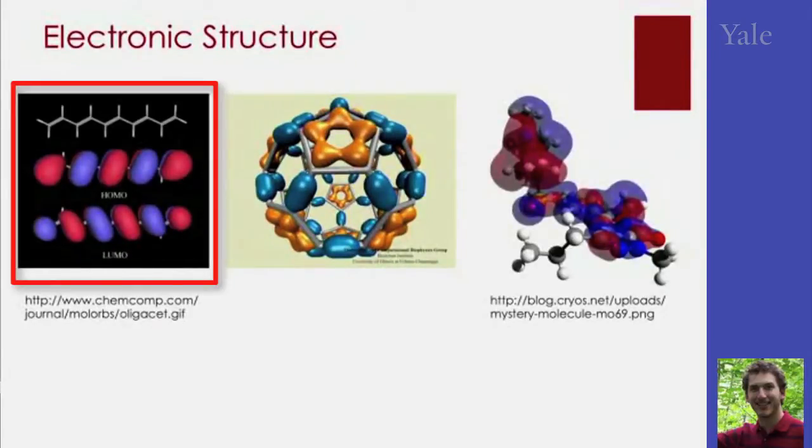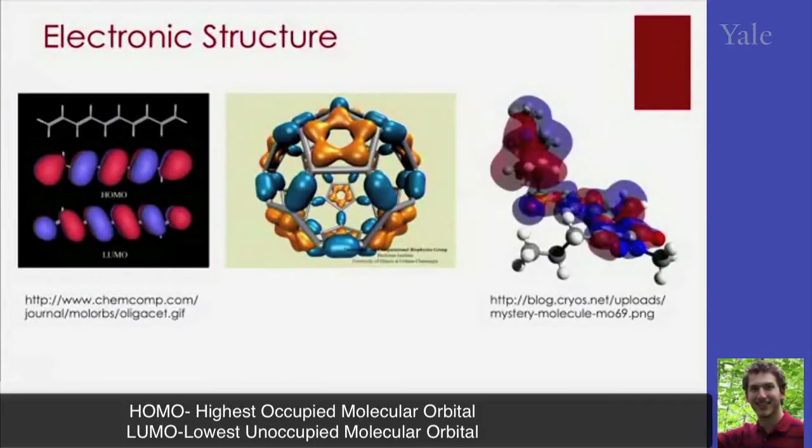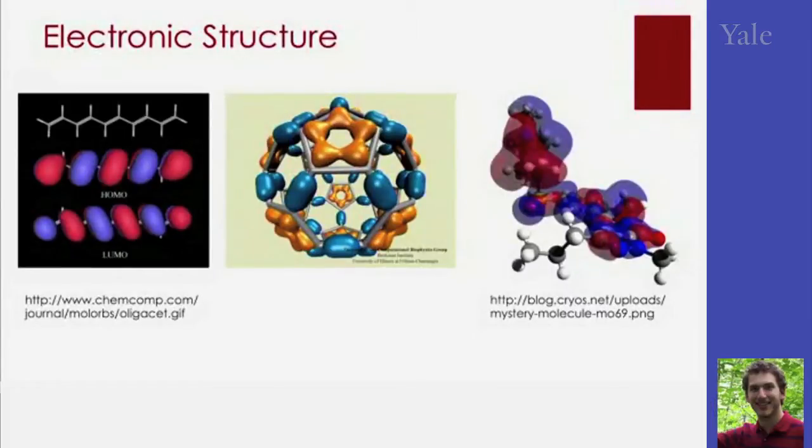On the very left, we see a conjugated system, a long linear molecule, and it shows both two orbitals, one called the HOMO, the highest occupied molecular orbital, and one called the LUMO, the lowest unoccupied molecular orbital. These are the orbitals that we talk about doing most of the chemistry.